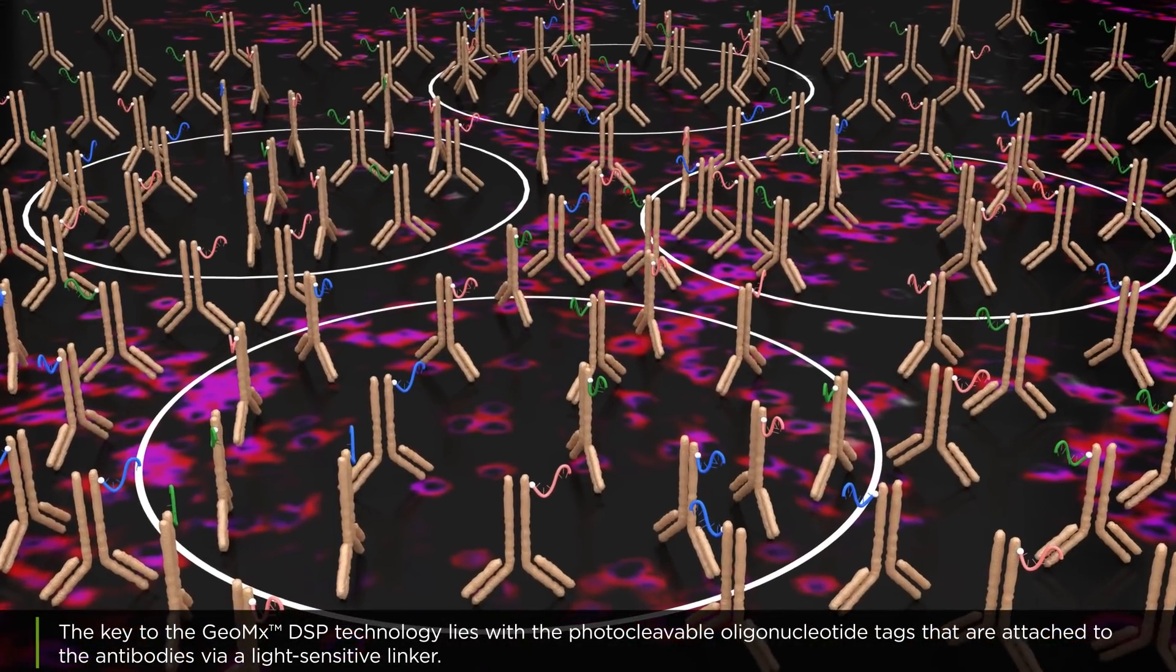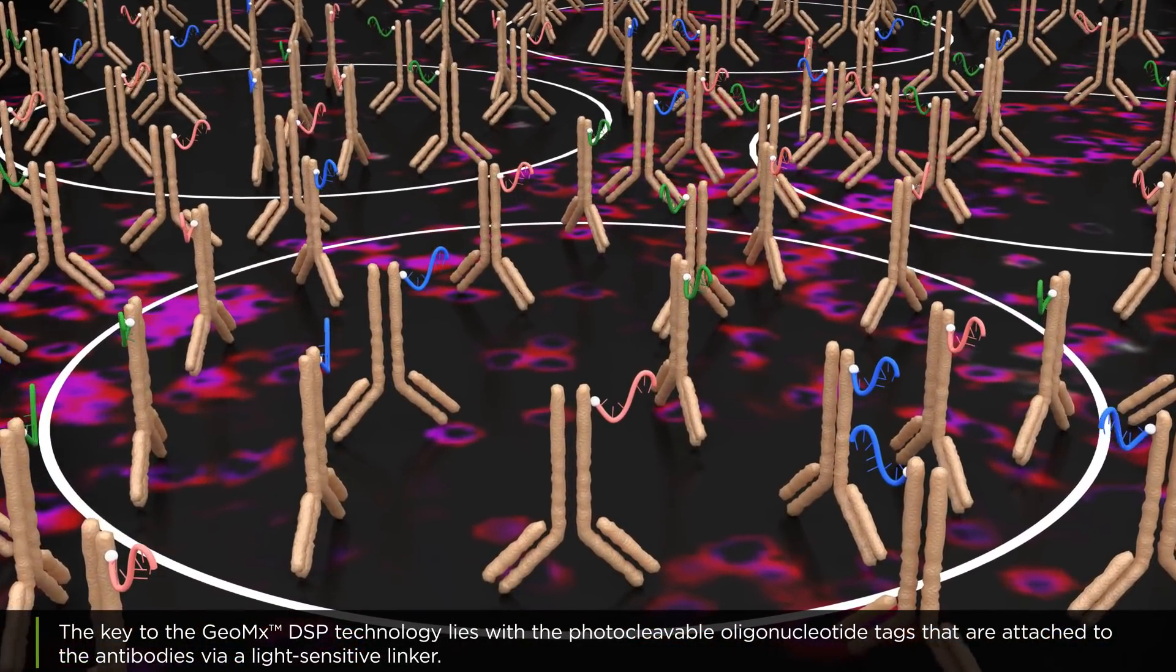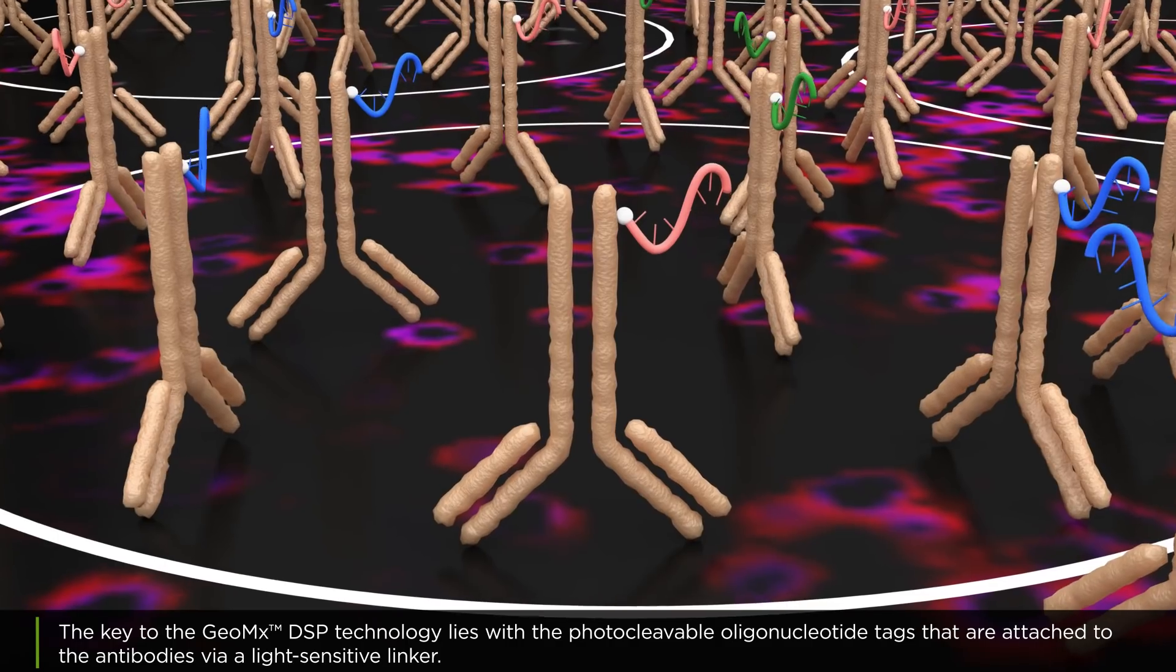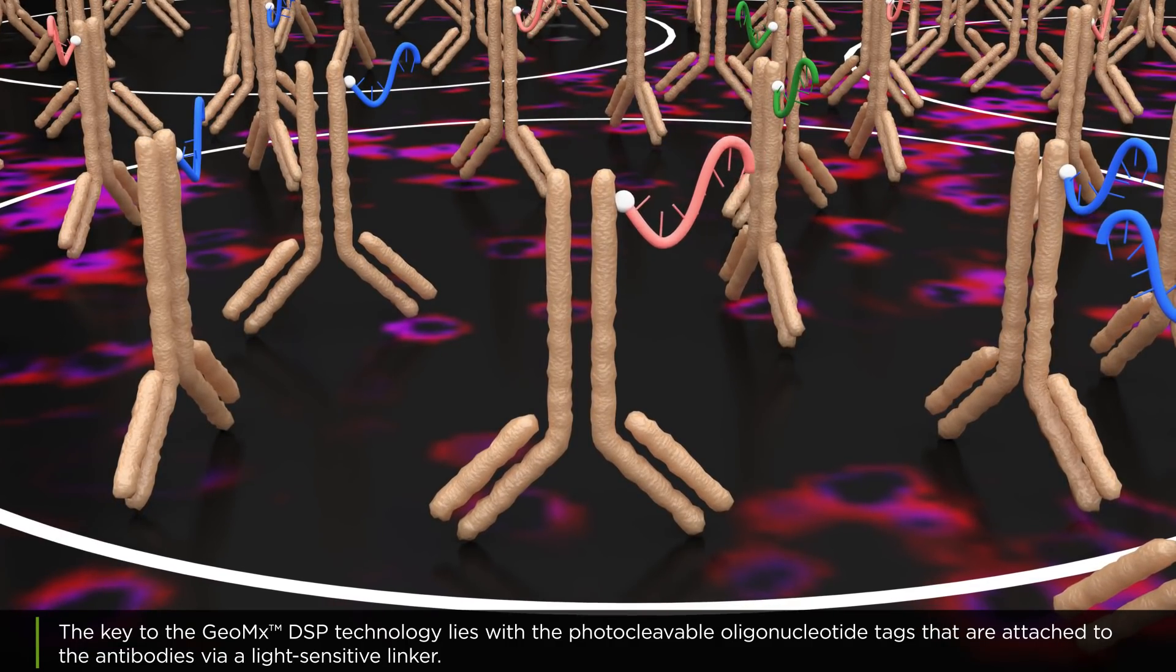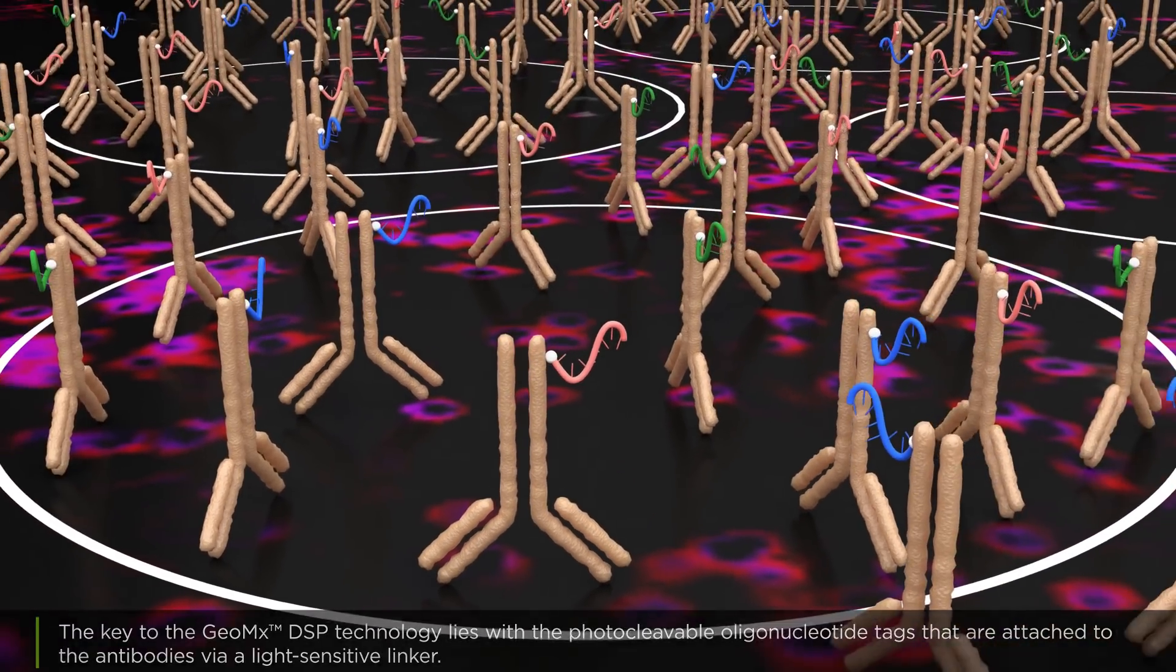The key to the GeoMix DSP technology lies with the photocleavable oligonucleotide tags that are attached to the antibodies via a light-sensitive linker.